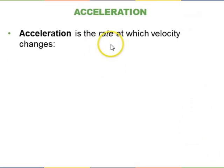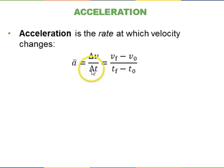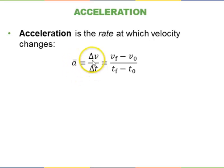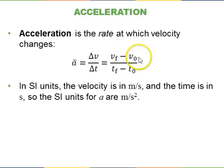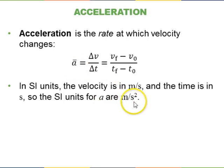Acceleration is the rate at which velocity changes. To calculate average acceleration — A with a little bar on top — it's the change in velocity divided by the change in time, or elapsed time: V-final minus V-initial divided by T-final minus T-initial. Since velocity is in meters per second and you divide by time in seconds, the units of acceleration are meters per second squared.